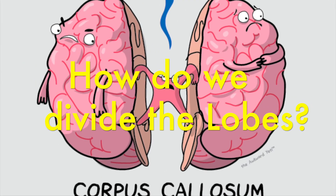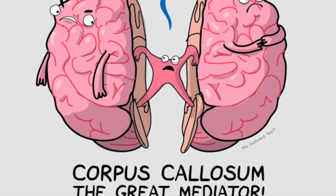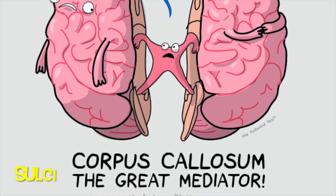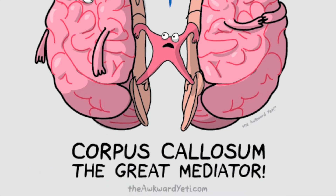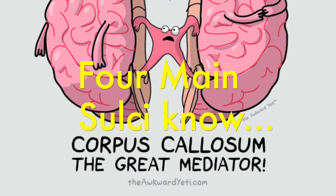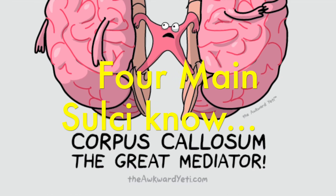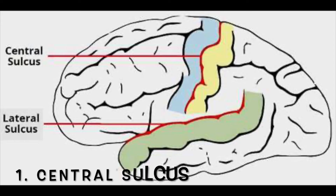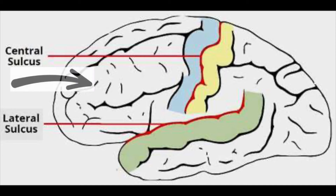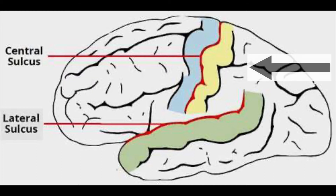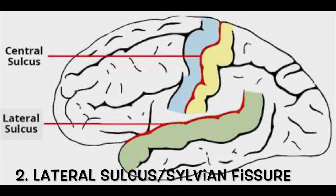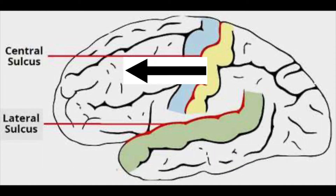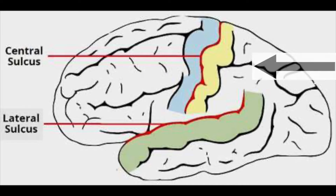The division of the lobes is defined by your sulci. There are four main sulci to know. Number one is the central sulcus, which divides your frontal and parietal lobe. Then there is the lateral sulcus, also known as the sylvian fissure, which divides your temporal, frontal, and parietal lobe.